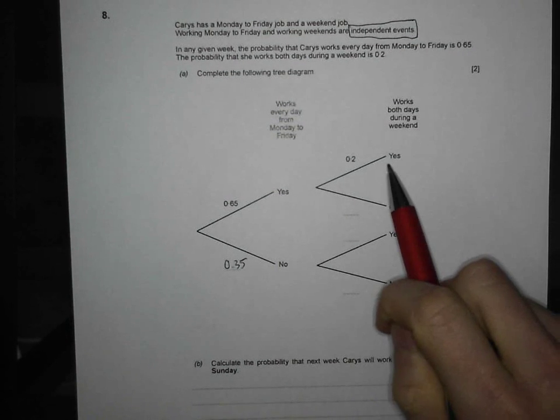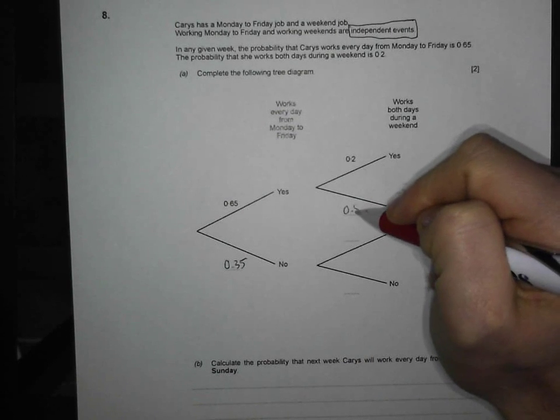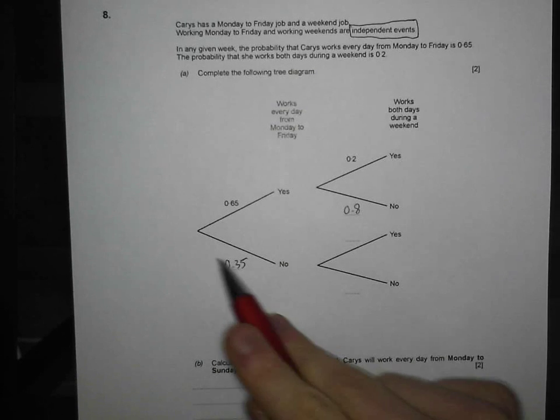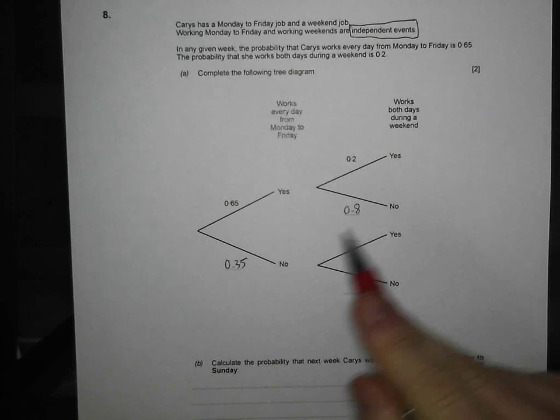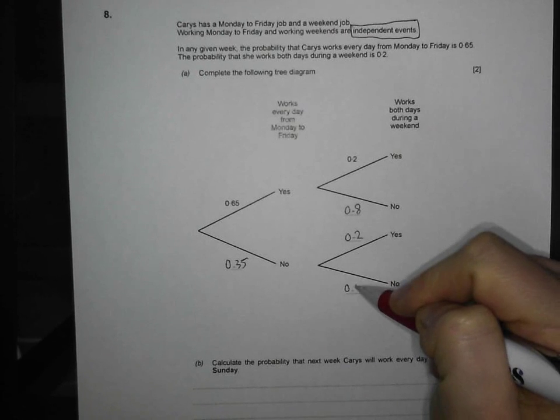Does she work both days during a weekend? Well, the probability is 0.2. The probability she doesn't must be 0.8. Again, got to be complements. It's independent of each other, so it doesn't matter what happens during the week. It has no impact on the weekend, so that's got to be 0.2, and that's got to be 0.8 as well.